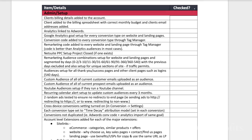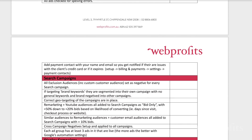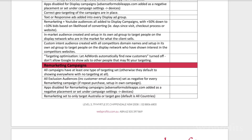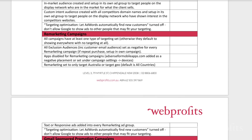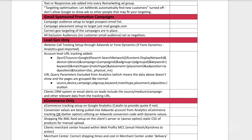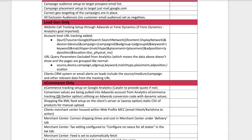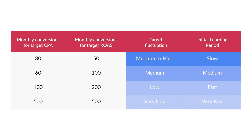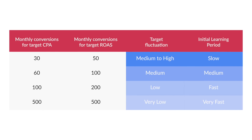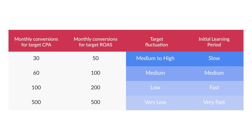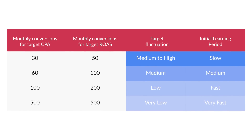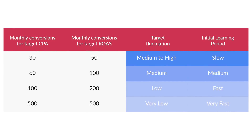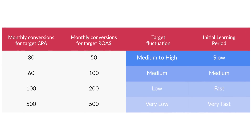Secondly, ensure you have built a best practice campaign which has segmented ad groups, awesome ads and offers, relevant keywords in the right match type, extensions in place and all other common elements in high converting campaigns. Thirdly, Google needs a lot of data to learn how to set its bids, so the more you have the better the results will be. You should definitely wait until your campaigns have been running for at least two months and until you're generating over 30 conversions per month before you test these bidding settings.